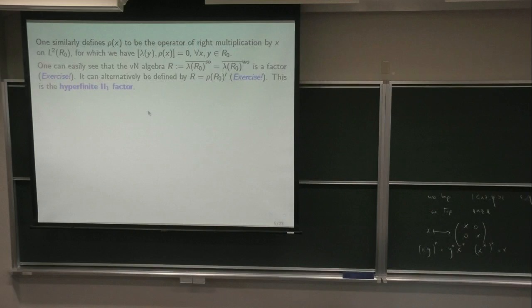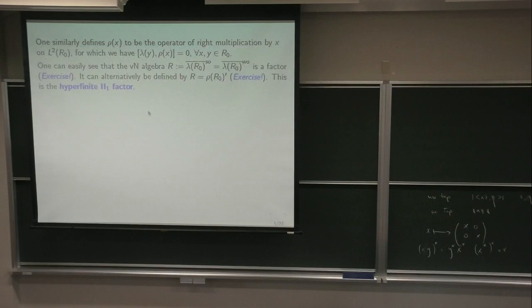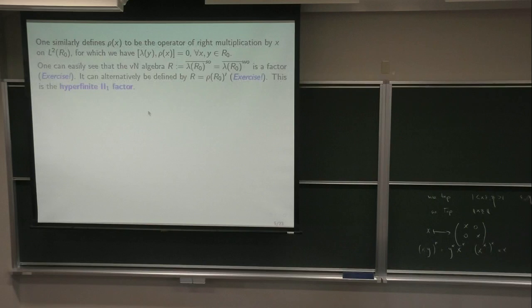One similarly defines rho of x to be the right multiplication operator by x on L²(R₀). Here it matters, unlike before when the function algebra L-infinity was commutative and left vs. right didn't matter. The two operators — lambda and rho — clearly commute. When you multiply from the right, the order changes, so rho is a star algebra morphism from R₀ opposite — where x times y in R₀ opposite is y times x in R — into B(L²).